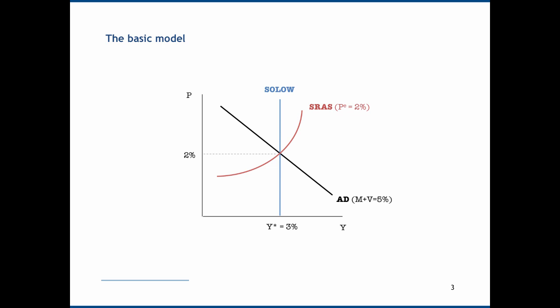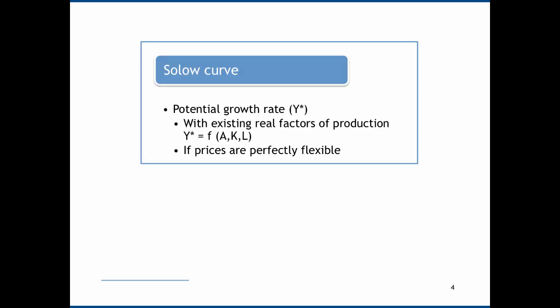There are three main components: the Solo curve, which is drawn in blue; the Aggregate Demand curve in black; and the Short Run Aggregate Supply curve in red. We're going to look at each of those in turn. Starting with the Solo curve — this derives from a Solo growth model. It tells us what the potential growth rate of the economy is, which we label Y star, given the existing real factors of production.